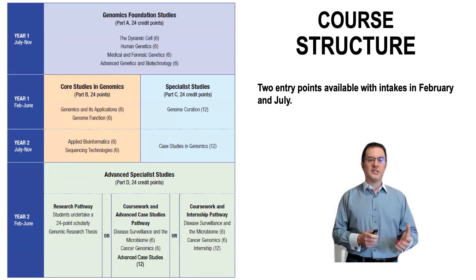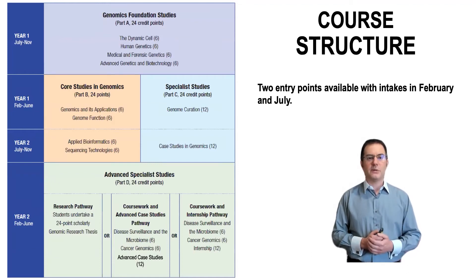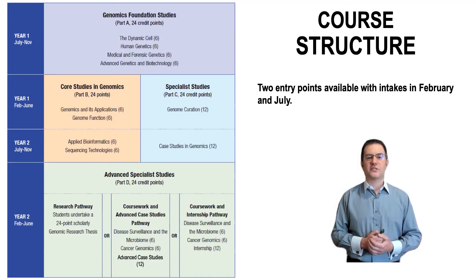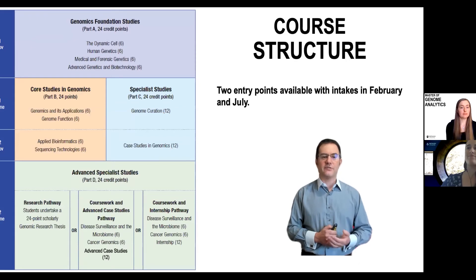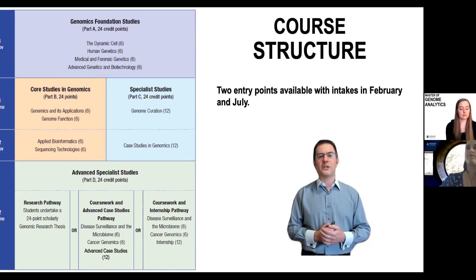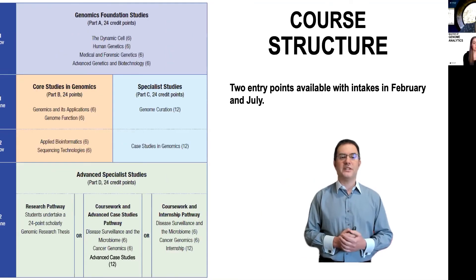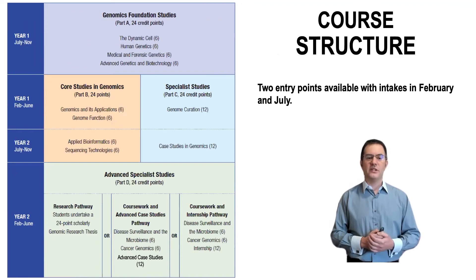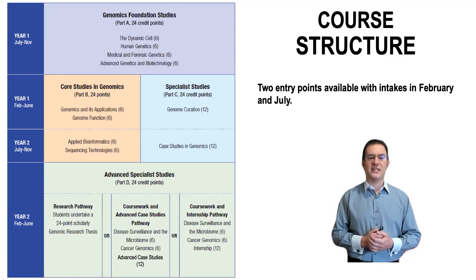The course structure — available on the course website if you can't see the details clearly — starts with foundation studies for students coming in with a broad biology background. These include units in human genetics, medical and forensic genetics, biotechnology, and the dynamic cell as a cell biology unit, giving you the necessary background before moving on to more advanced concepts. If you've already got an undergraduate degree in biomedical sciences or genetics you can enter straight into the February intake, where you study the core studies in genomics alongside the specialist studies covering the application.